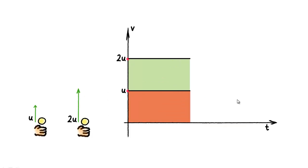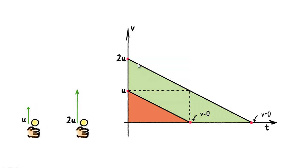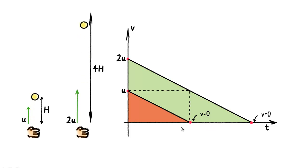I get it. Normally, if something travels at 2 times the speed, it will travel 2 times the distance. But for a vertical throw, if you start off twice as fast, you also get to travel for 2 times the amount of time before you are brought to rest. Twice the speed for twice the time — four times.